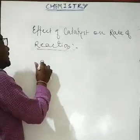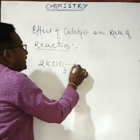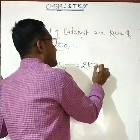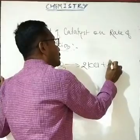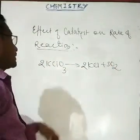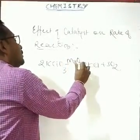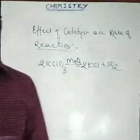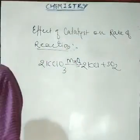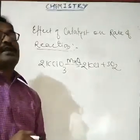For example: decomposition of potassium chlorate — 2KClO₃ → 2KCl + 3O₂ — takes place in the presence of MnO₂ (manganese dioxide). In this reaction, MnO₂ acts as a catalyst. It increases the speed of reaction. Without catalyst the speed is lower, but in the presence of catalyst the speed of reaction increases.